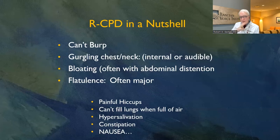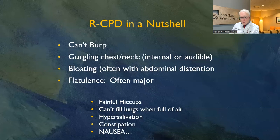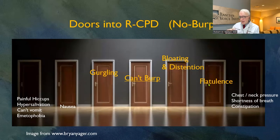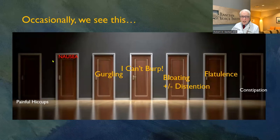Those are the big four. If you fit those four and it's basically lifelong, you qualify for this disorder called RCPD — that's a very clear four-part syndrome. There are other symptoms that are a little less universal but still very common. The disorder has four main doors: can't burp is central, plus gurgling, bloating and distension, and flatulence — each can have more or less prominence for an individual. Sometimes people get to the diagnosis through the doorway of nausea.